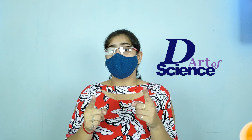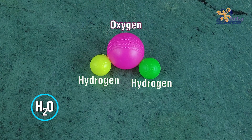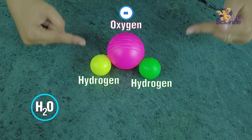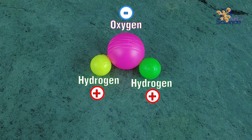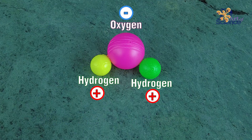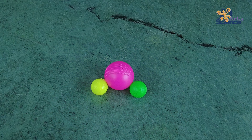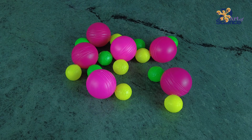I'm Chandni and you're watching The Art of Science. A water molecule consists of one oxygen atom and two hydrogen atoms. The oxygen atom is negatively charged and the hydrogen atoms are positively charged. Water is called a polar liquid. Polarity means that the charge around the molecule is not uniform. In a water molecule, there is more concentration of negative charge around the oxygen atom and a partial positive charge around the hydrogen atoms.